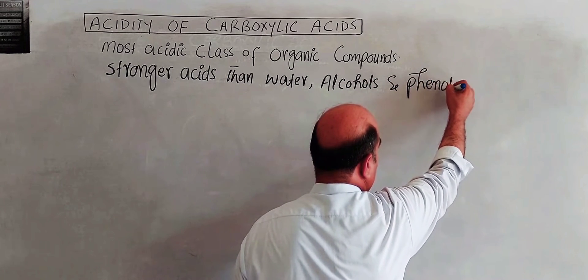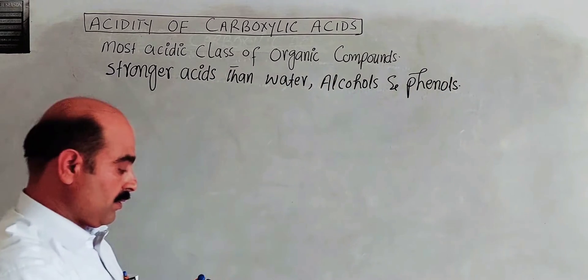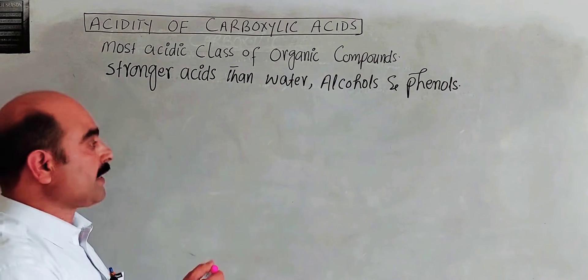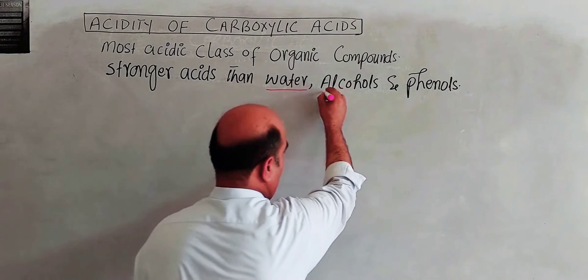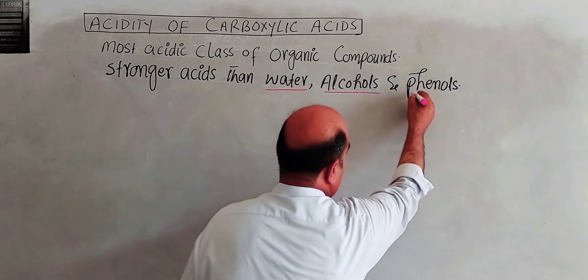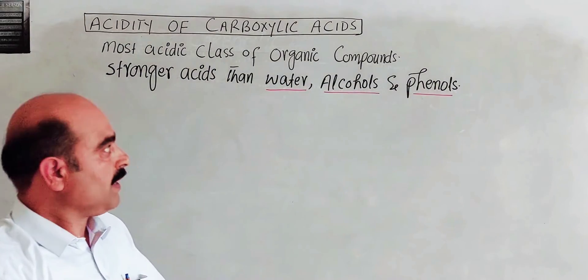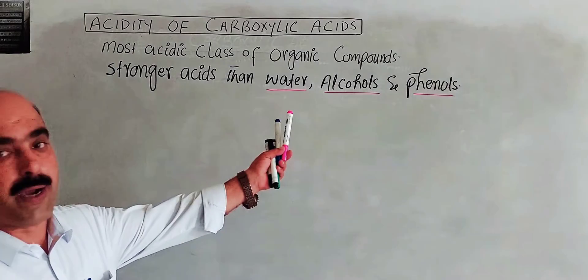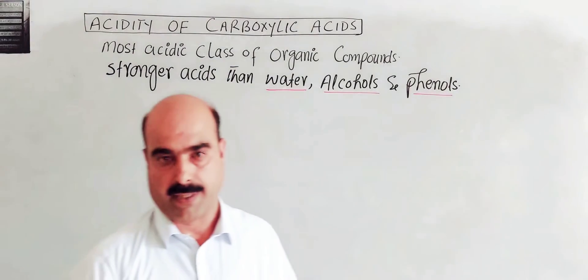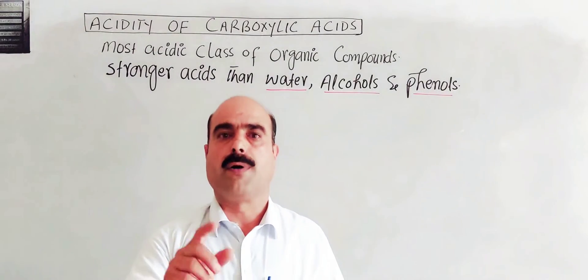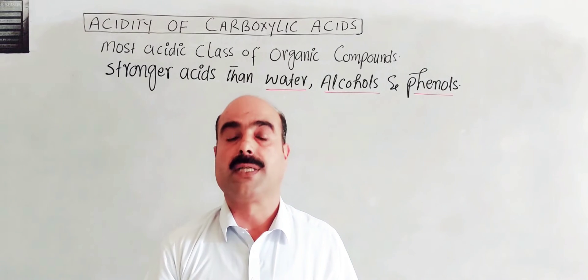Water, alcohols, and phenols all provide hydrogen ions, but carboxylic acids are stronger acids compared to all three of these.